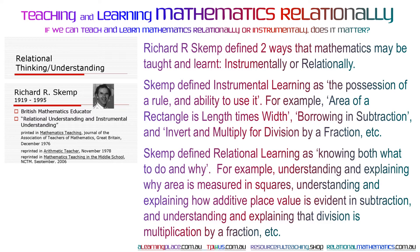Skemp defined relational learning as knowing both what to do and why. For example, understanding and explaining why area is measured in squares, understanding and explaining how additive place value is evident in subtraction, and understanding and explaining that division is multiplication by a fraction.